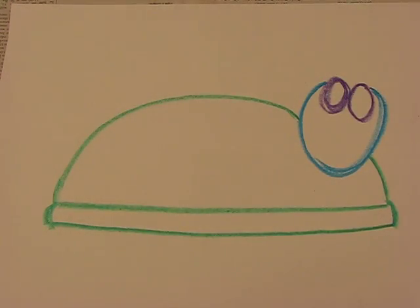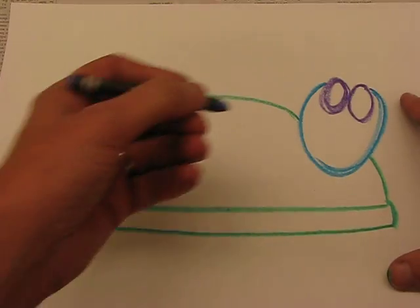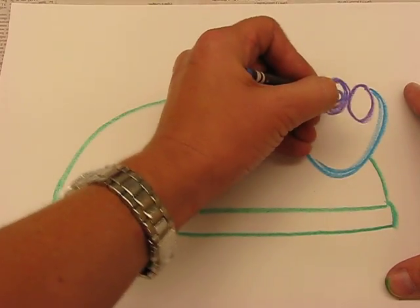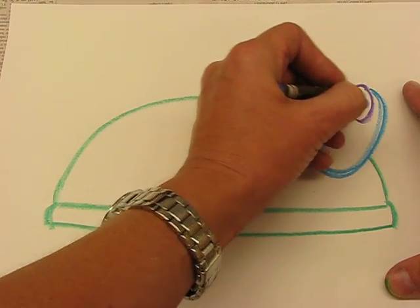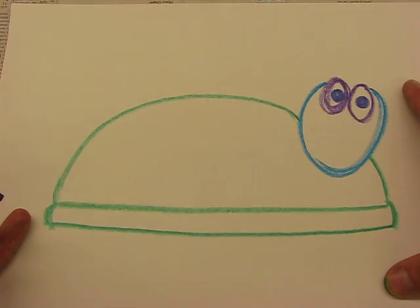I'm going to get a dark crayon or construction crayon and I'm going to draw two circles, two dots inside those oval eyes. So now my turtle's got eyes and you know which direction that he's looking in.